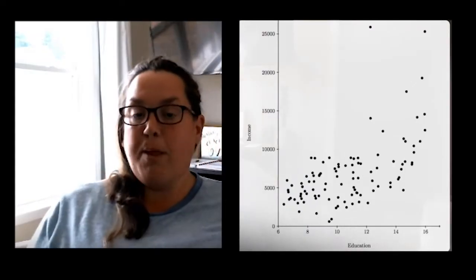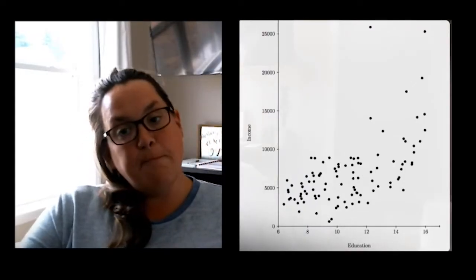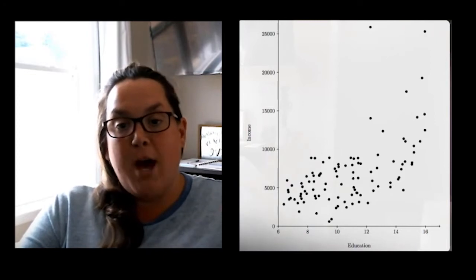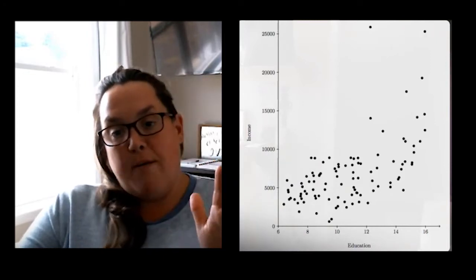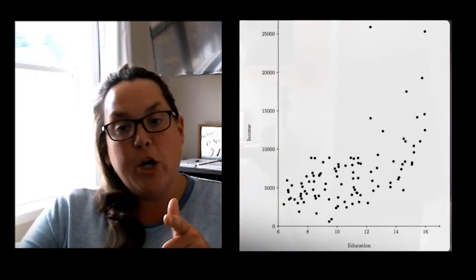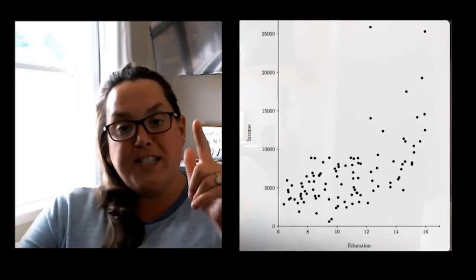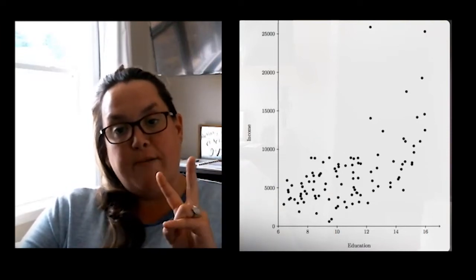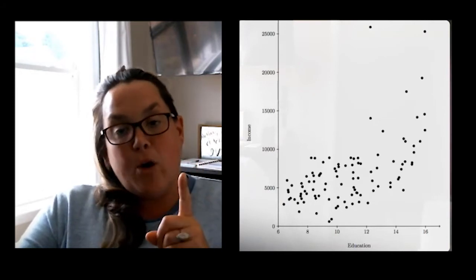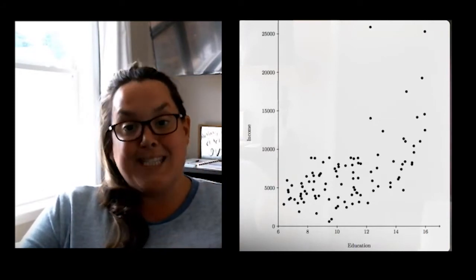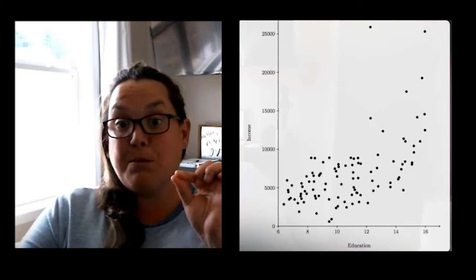This is the scatterplot we're going to be looking at today. You can see that we have education and then we have income. Just a quick reminder, when you're talking about this type of situation where you have at least two quantitative variables, the variable that's on the x-axis is doing the explaining.